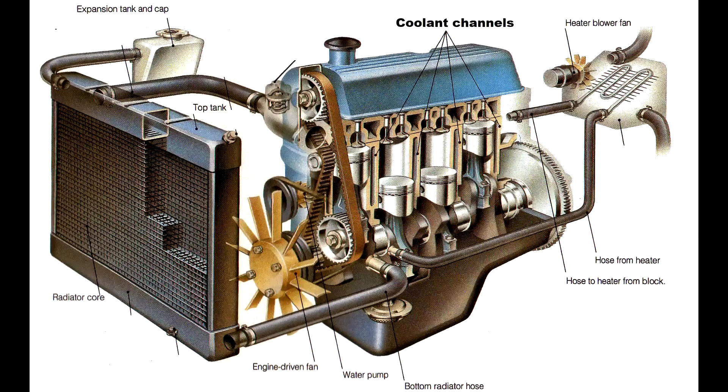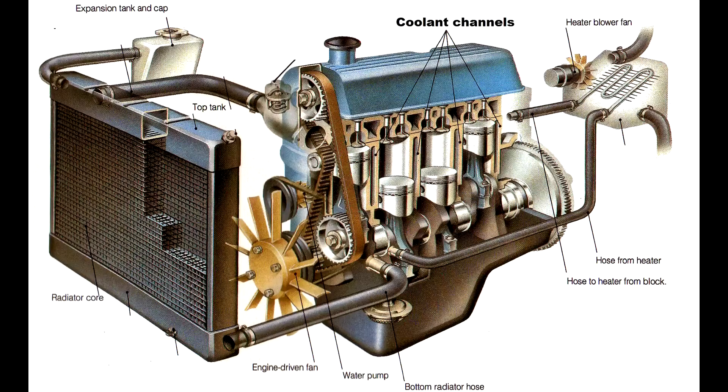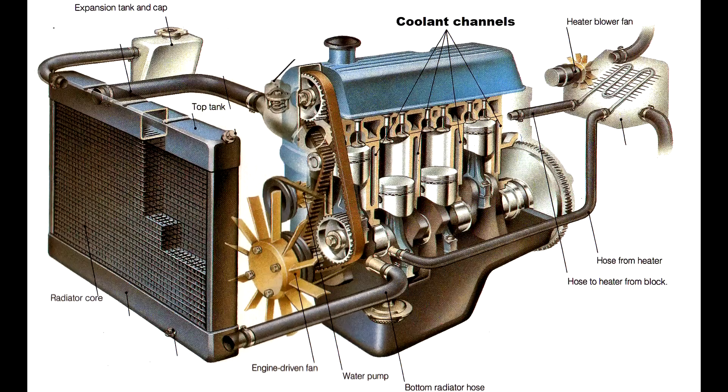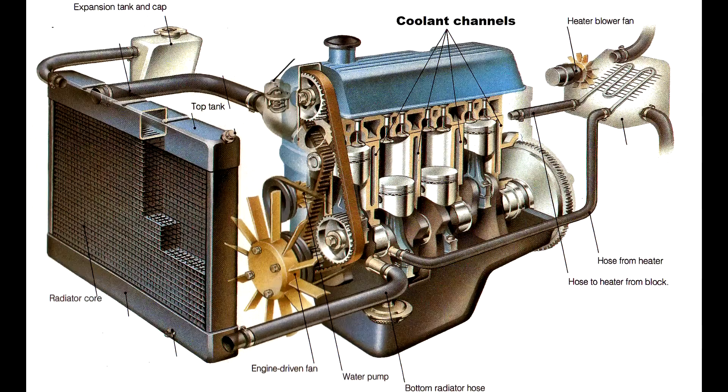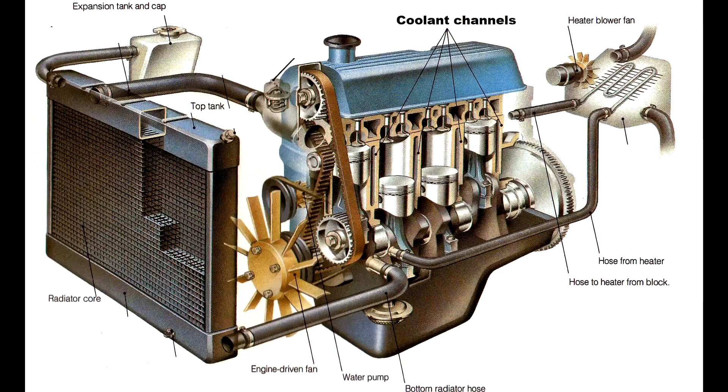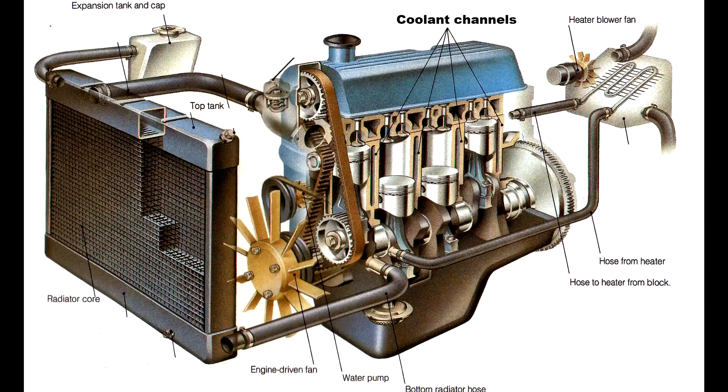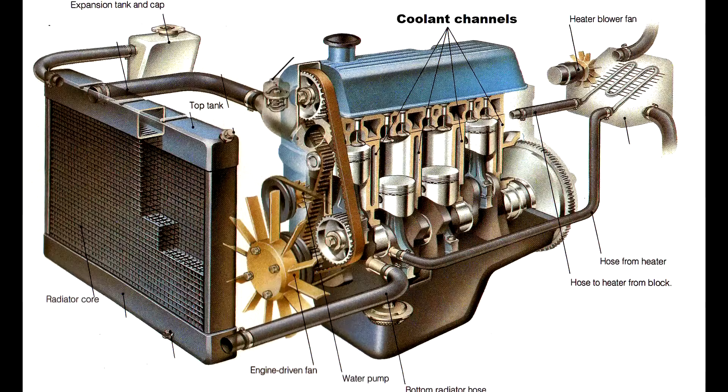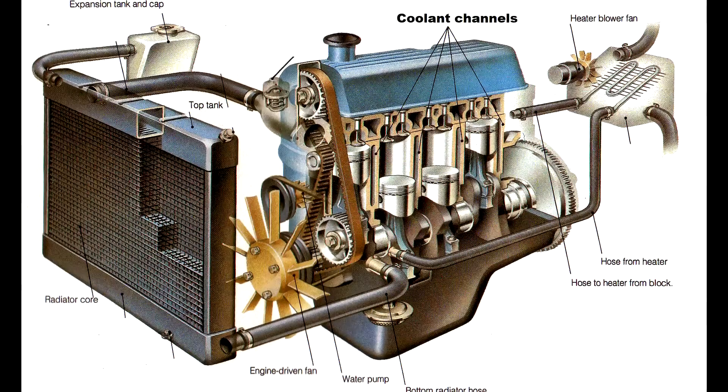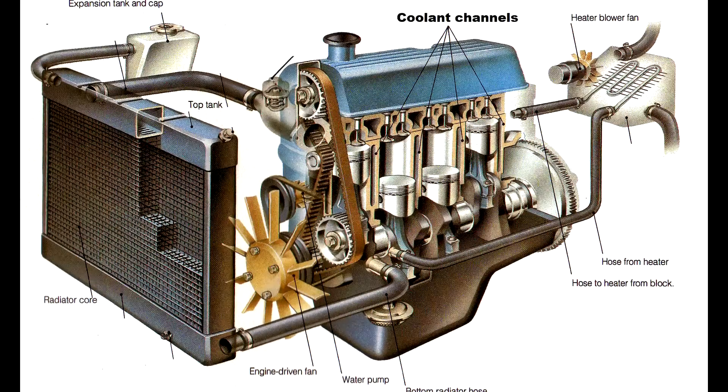After cooling hot engine parts, coolant circulates through the radiator. The radiator has a network of small tubes and fins. Coolant passes through these channels while air pulled in by the radiator fan blows by the tubes cooling the hot liquid for circulation.